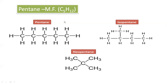For pentane (C₅H₁₂), there is one structure with all carbon atoms in a straight chain — normal pentane — and another where one carbon atom is on a branch, forming isopentane. In neopentane, one central carbon atom is attached to four other carbon atoms with no hydrogen on that central atom. So compounds having the same molecular formula C₅H₁₂ but different structures — pentane, isopentane, and neopentane — demonstrate isomerism, a very important property of organic compounds.